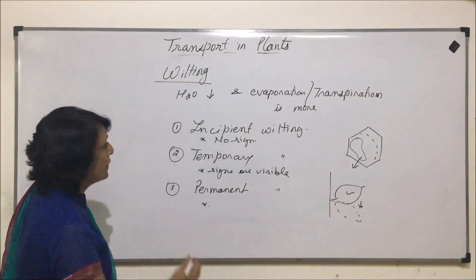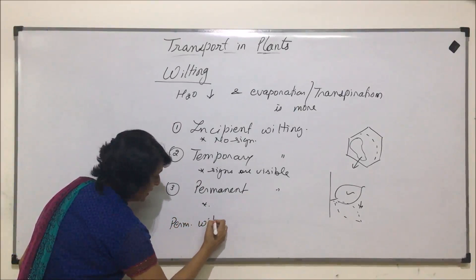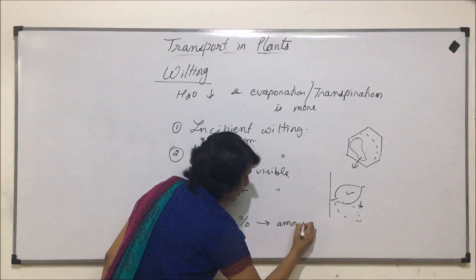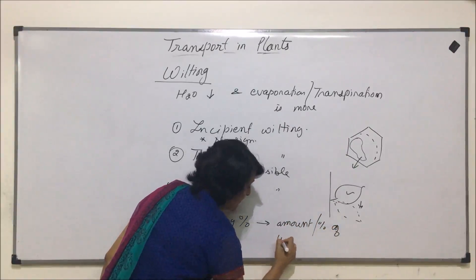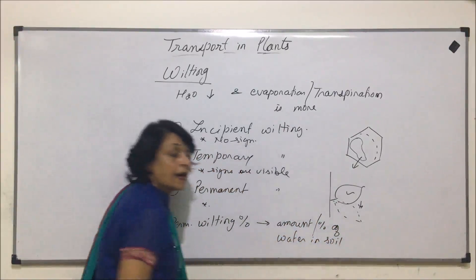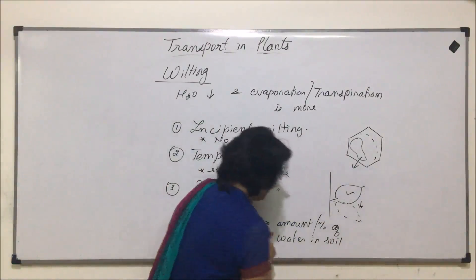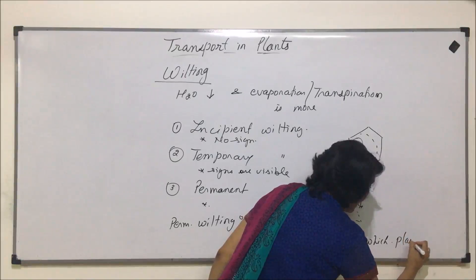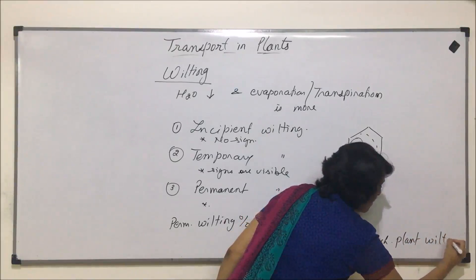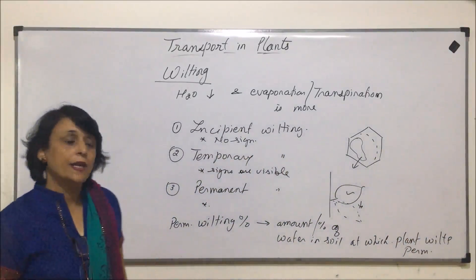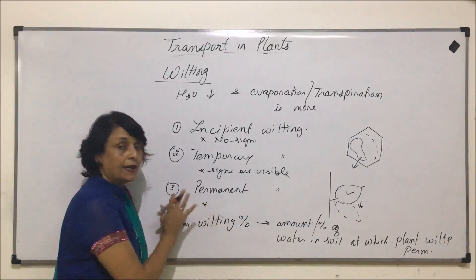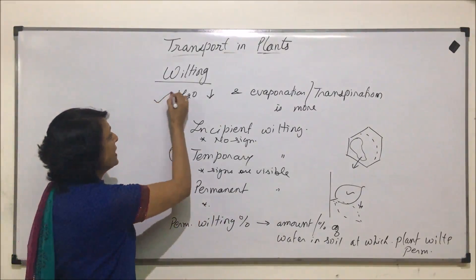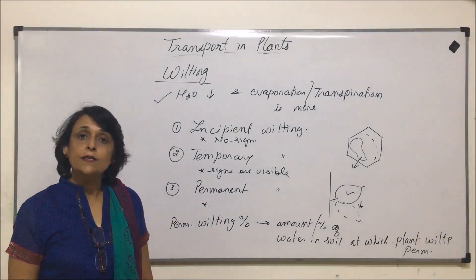There is one more term: permanent wilting percentage. This is the amount or percentage of water in the soil at which the plant shows or undergoes permanent wilting — that is, the plant wilts permanently. That percentage of water in the soil will be called the permanent wilting percentage. This is also in reference to transport of water, and we use this term whenever less water is available and more is lost from the plant body.